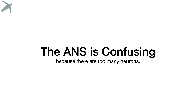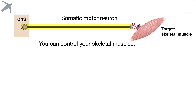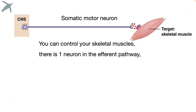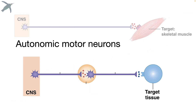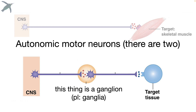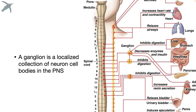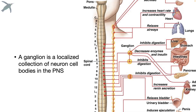Why is it so confusing? Because there are too many neurons involved, and also ganglia — students hate ganglia. We're going to compare this to the somatic motor division. Somatic motor pathways include one somatic motor neuron that synapses onto skeletal muscle — there's only one neuron in the efferent pathway. Autonomic motor neurons are more complicated: there are two neurons instead of one, and between them is a ganglion — plural ganglia. A ganglion is a collection of nerve cell bodies that lie outside the central nervous system. All of those yellow structures you see here are ganglia.